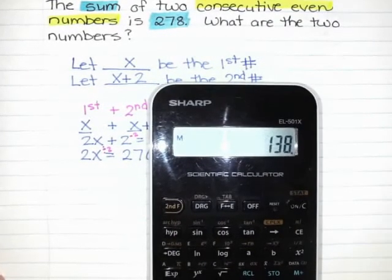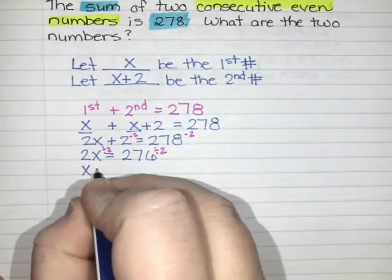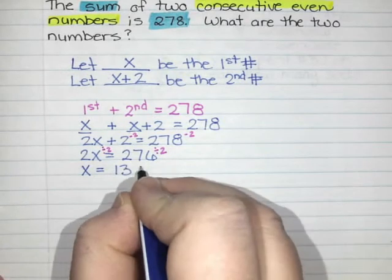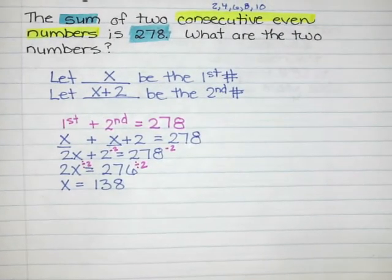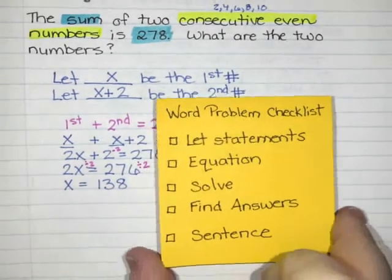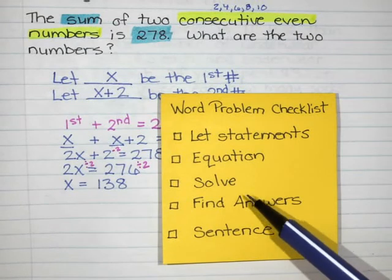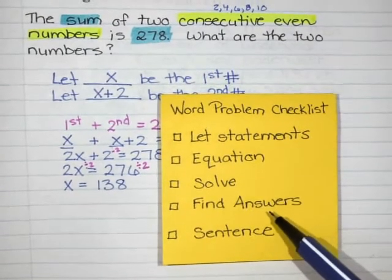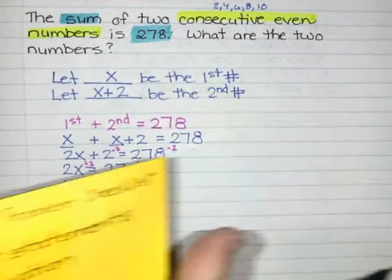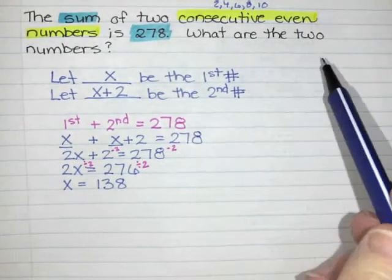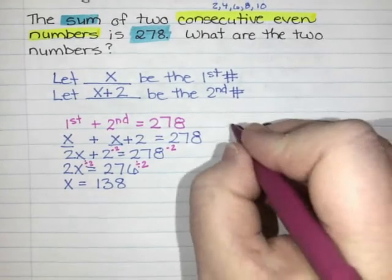276 divided by 2 is 138, so x equals 138. At this point I often think that I am done the question, but if I check my little checklist here, I've done the let statements, I've done an equation and I solved, but I still haven't actually answered the question. So I need to go back and find the answers to the question and then write a sentence. My question said what are the two numbers, so I'm going to come back to my let statements. I know the first number...